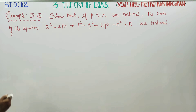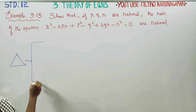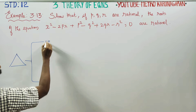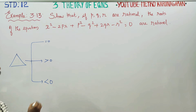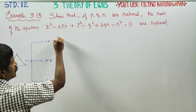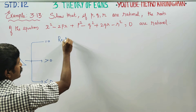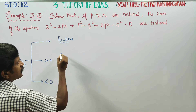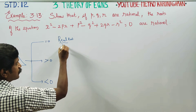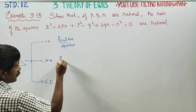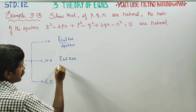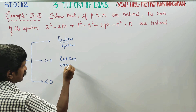First of all, regarding the discriminant, let me give you information. If discriminant equals 0, we get real and equal roots. If discriminant is greater than 0, we get real and unequal roots.